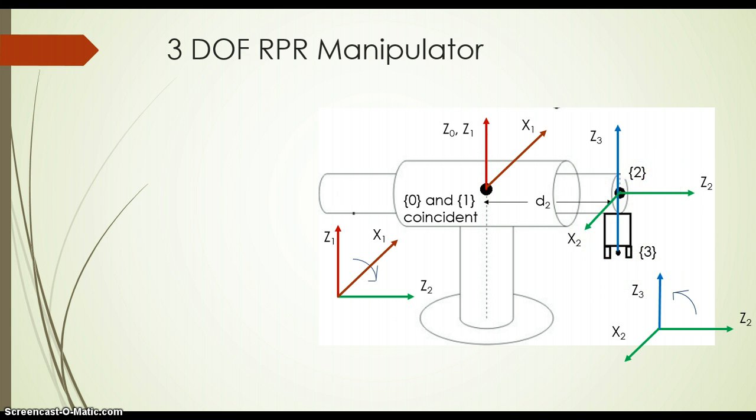So by taking right rotation from z2 to z3, we can have the direction of x2 which is pointing outward, and we will assign x2. Similarly, we need to assign x3 again aligned with x2, because joint 3 will be the last joint. So when theta 3 equals 0, x3 should align with x2. Let us also assign y1 as well as y2 using the right-hand rule.